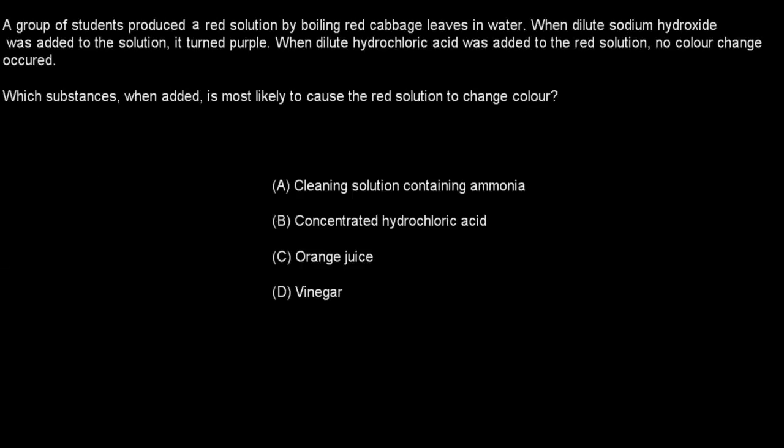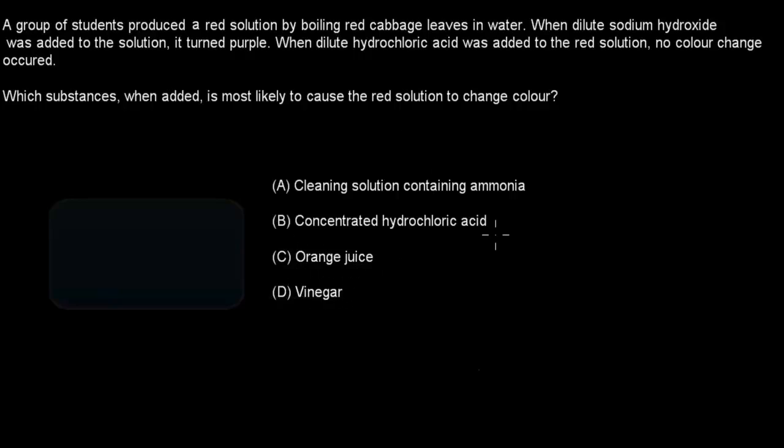So the first question says, a group of students produced a red solution by boiling red cabbage leaves in water. When dilute sodium hydroxide was added to the solution, it turned purple. When dilute hydrochloric acid was added to the red solution, no color change occurred. Which substance, when added, is most likely to cause the red solution to change color? A. Cleaning solution containing ammonia. B. Concentrated hydrochloric acid. C. Orange juice. Or D. Vinegar. When you're ready, pause the video and attempt the question.